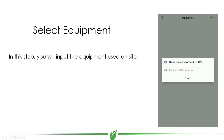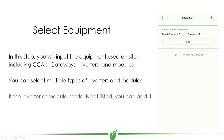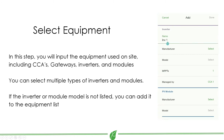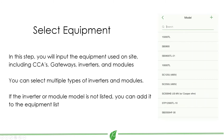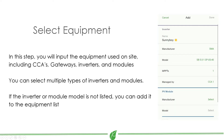Select the PV equipment used on site, including the number of CCA data loggers, gateways, inverters, and modules. You can select multiple types of modules and inverters on a single site.